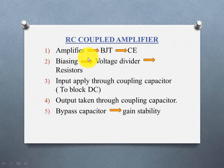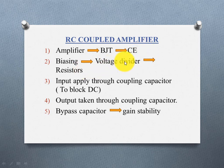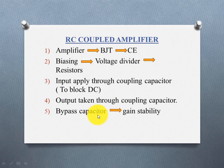Summary of the five points: First, BJT in common emitter configuration — input to base, output from collector. Second, biasing using voltage divider — external supply connected through resistors. Third, input applied through a coupling capacitor. Fourth, output taken through a coupling capacitor. Fifth, bypass capacitor on the emitter side in parallel with the emitter resistor.